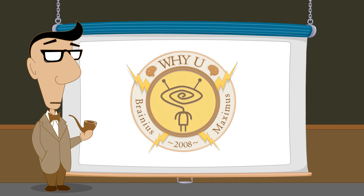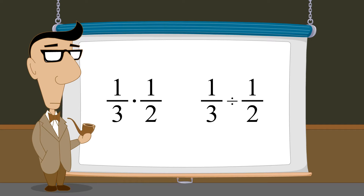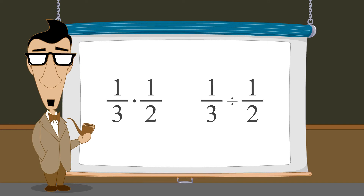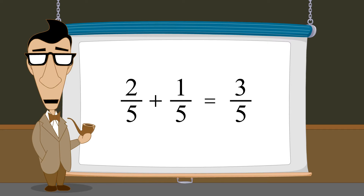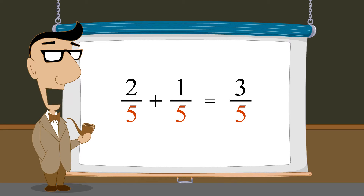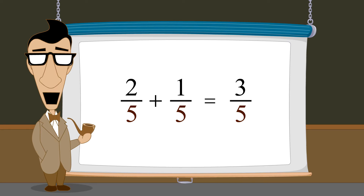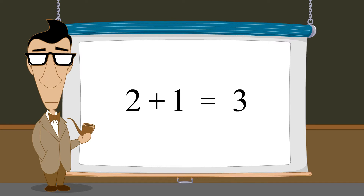In the previous lectures, we saw how to multiply and divide fractions. We also saw that adding and subtracting fractions is easy as long as they have the same denominators. In that case, it's very much like adding and subtracting integers.